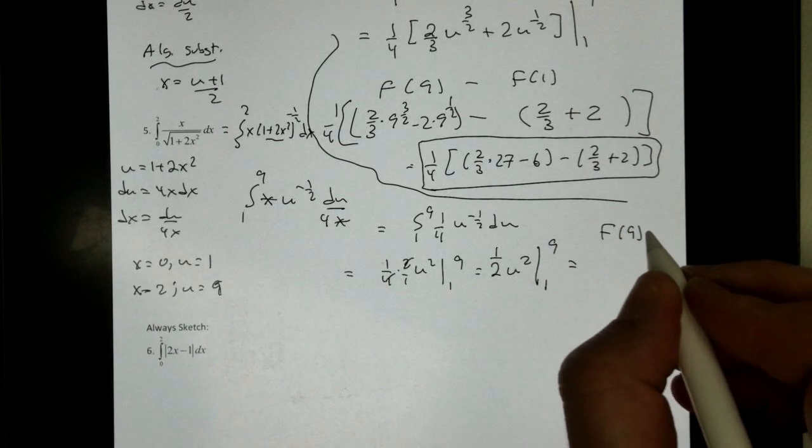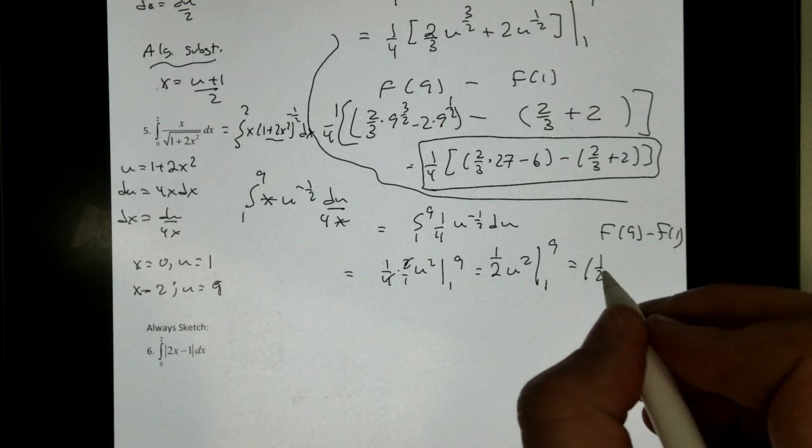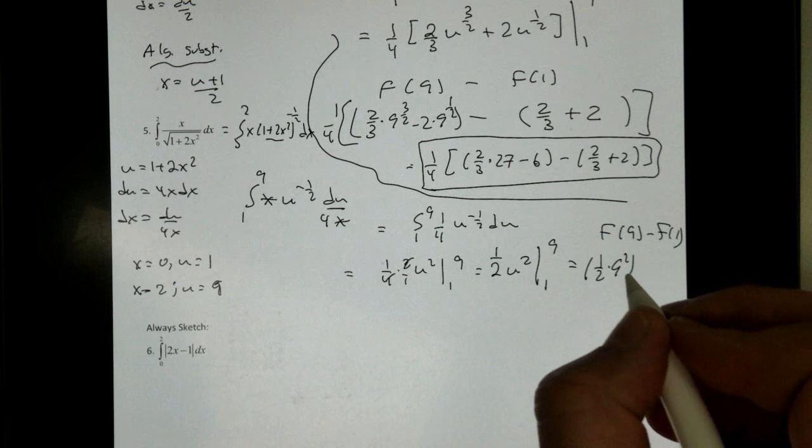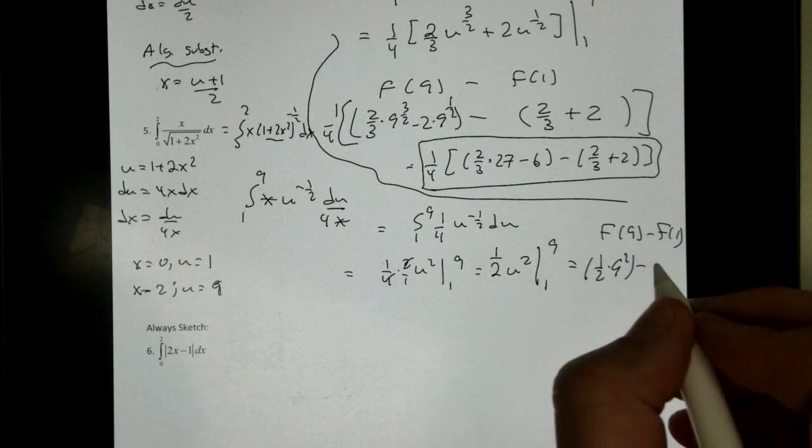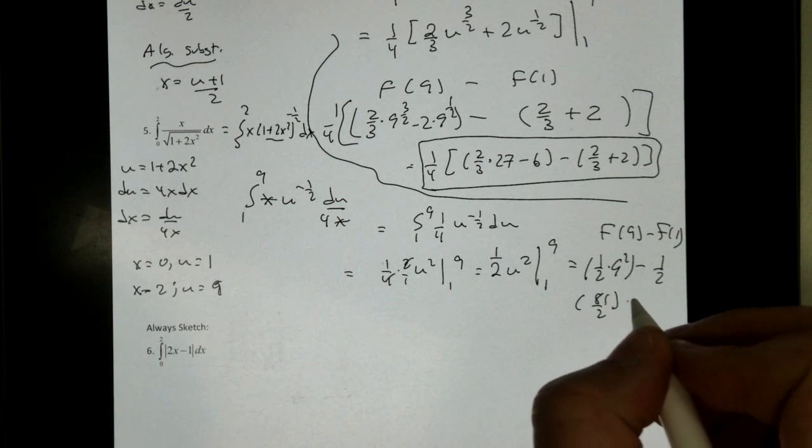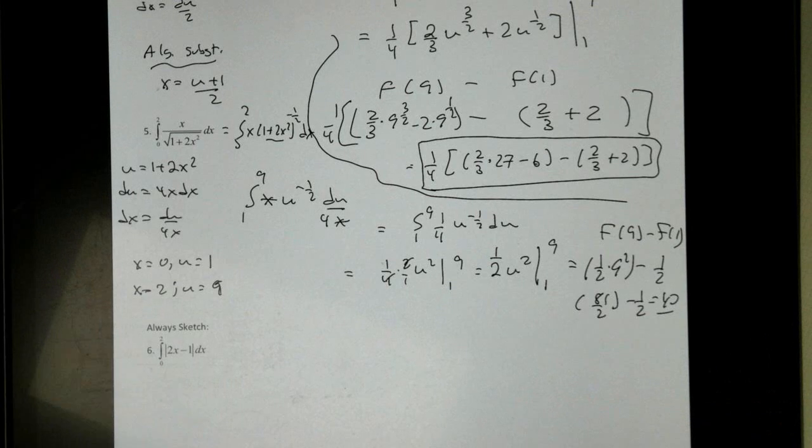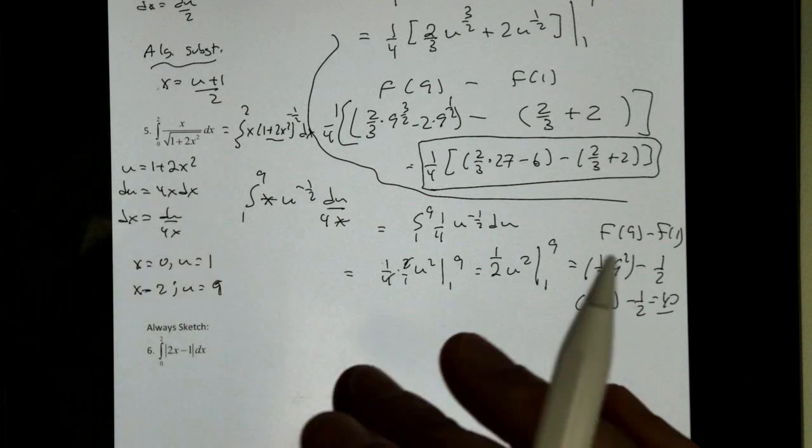Doing our FTC, f of 9 minus f of 1. We get 1 half times 9 to the 1 half minus, and if you just plug 1 in here, that's just 1 half. So we would get 81 over 2 minus 1 half, or 40 in that case. I think it works out pretty nicely. Now, this is pretty easy to do, as you can tell.